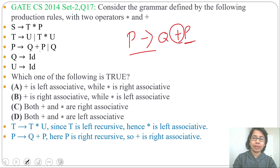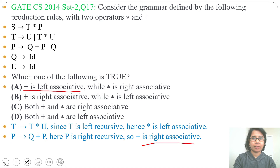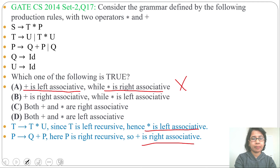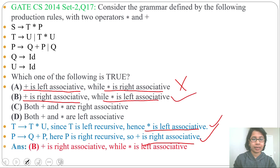We found that multiplication is left associative while plus is right associative. Let's analyze the options. Option A says plus is left associative — no, plus is right associative. And multiplication is left associative — yes, that's correct. But option A is partially wrong. Option B says plus is right associative — yes — and multiplication is left associative — yes. So option B is the correct answer.